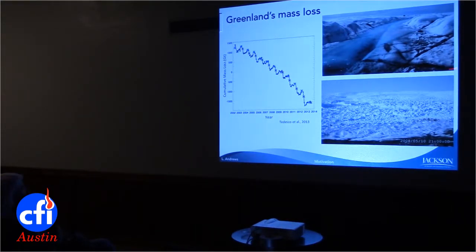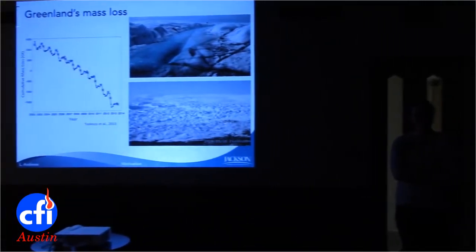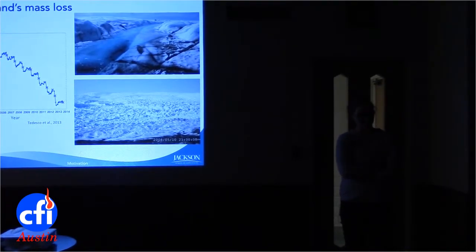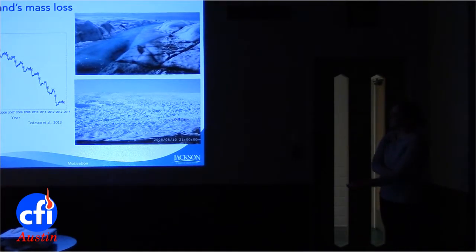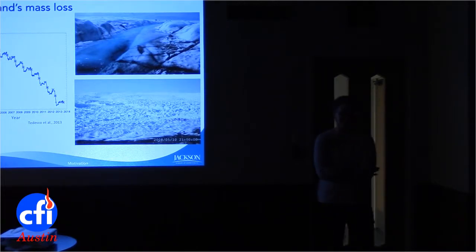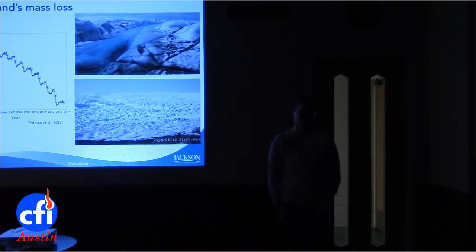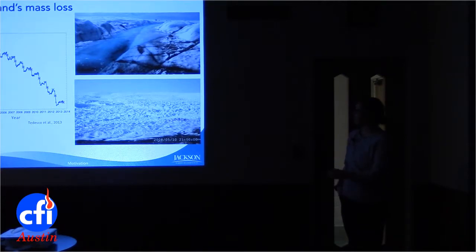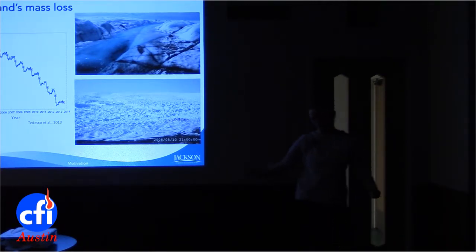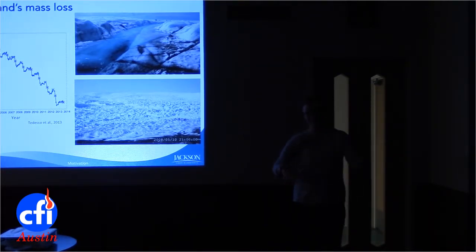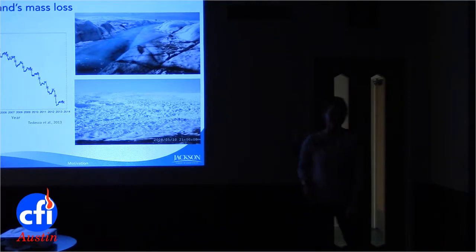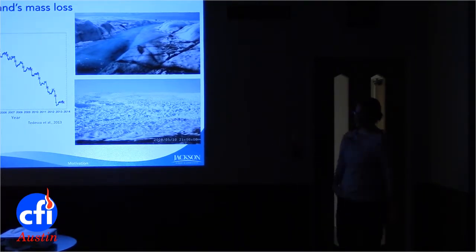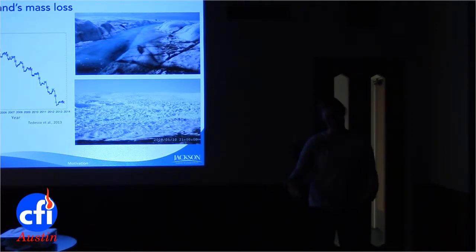There are rivers of meltwater visible on the ice — these features can range in size from something you can jump across to something the size of the Colorado River. The drainage basins these streams drain are relatively small, so you can generally go up around to a point where you can cross. But these streams aren't all heading to the sea — what they're actually doing is draining into those moulins.